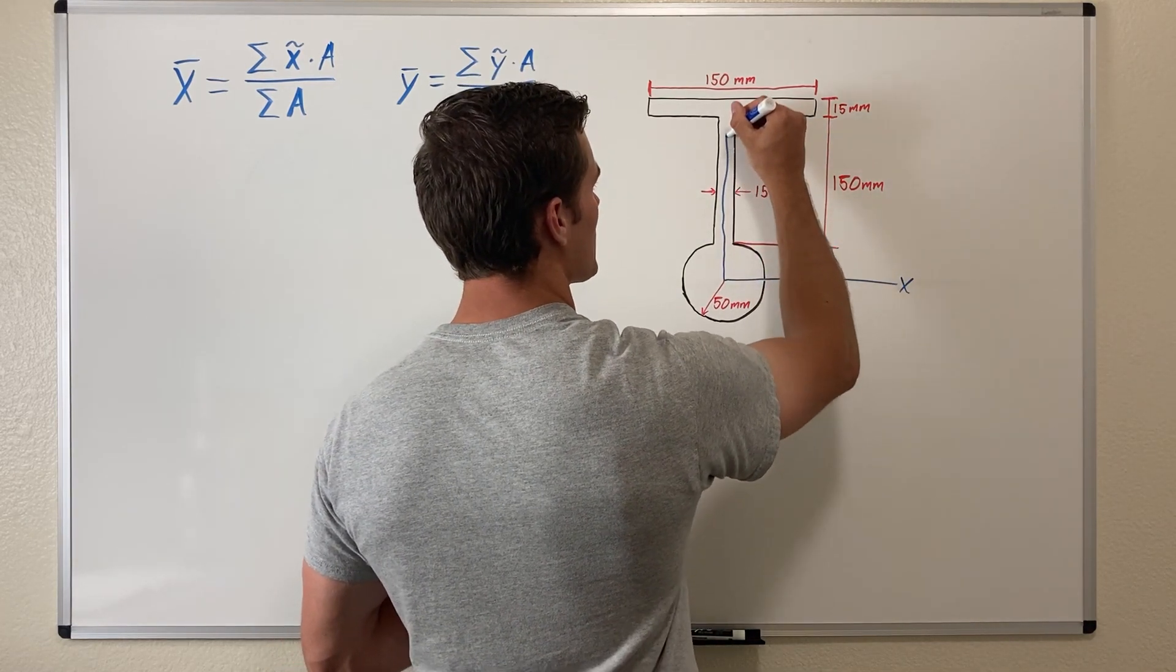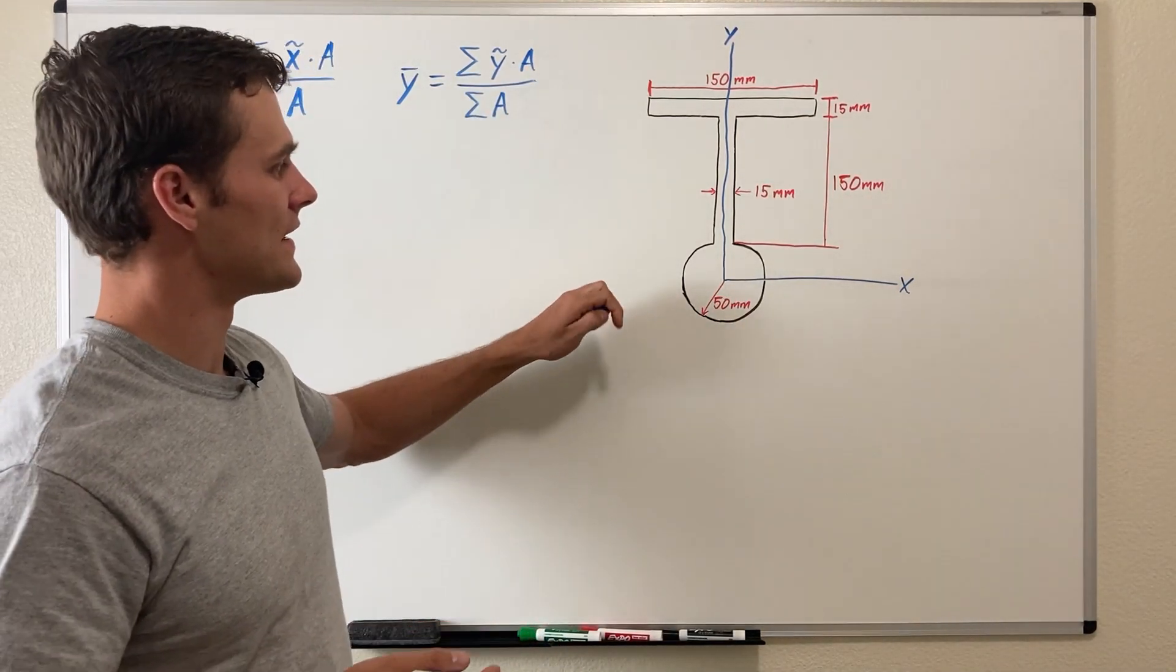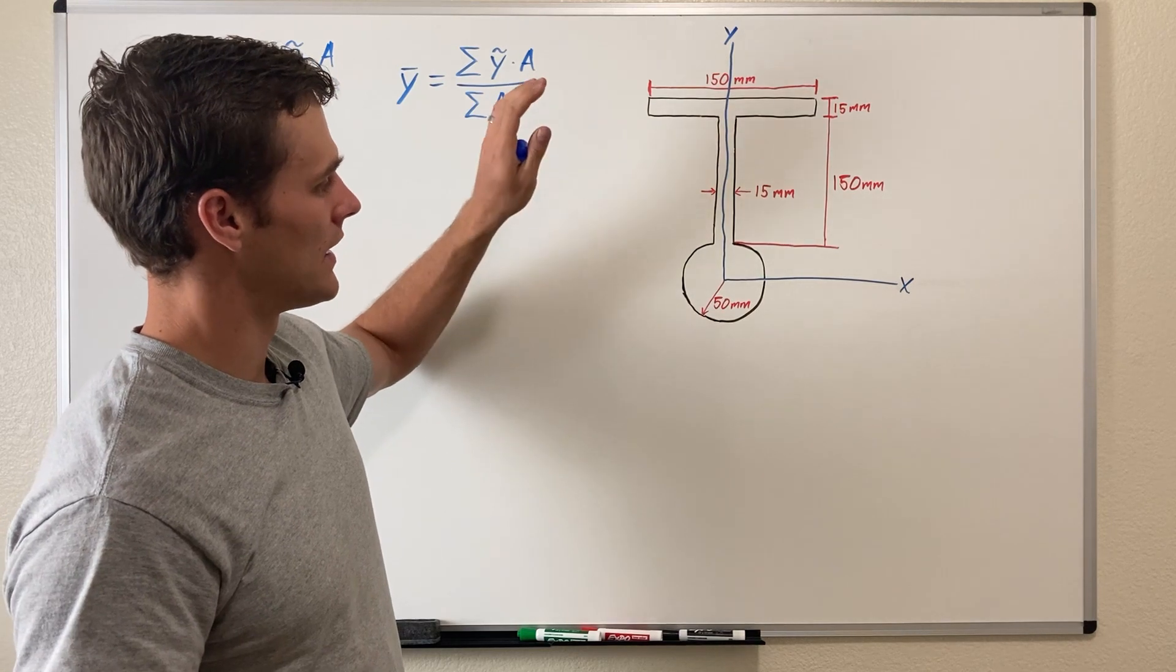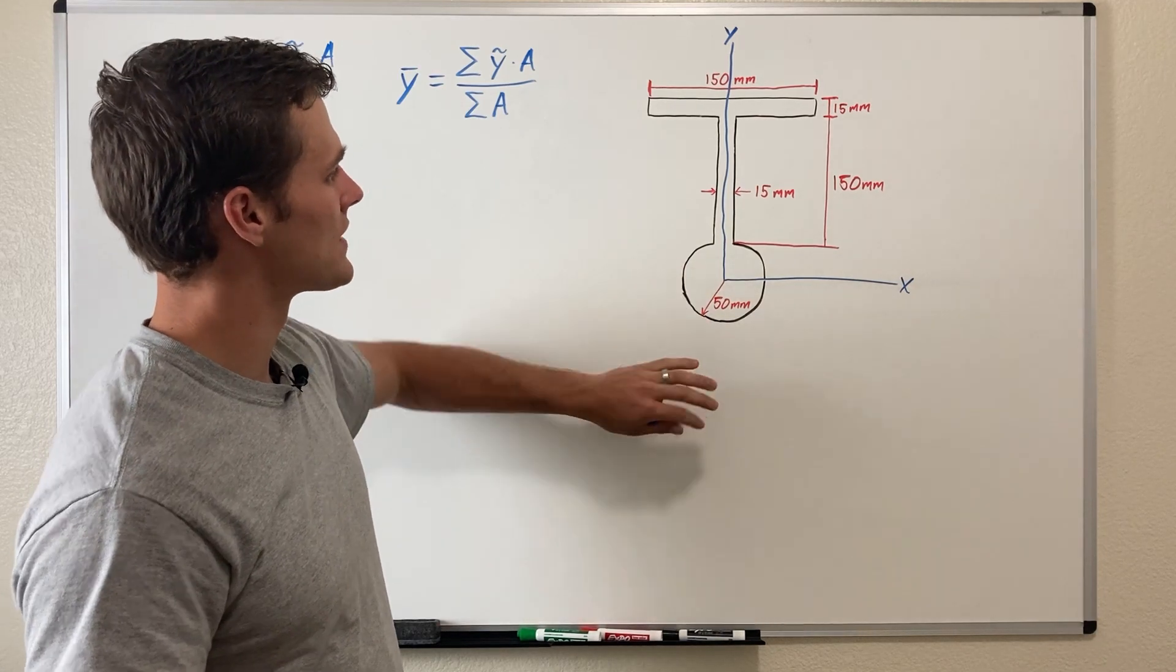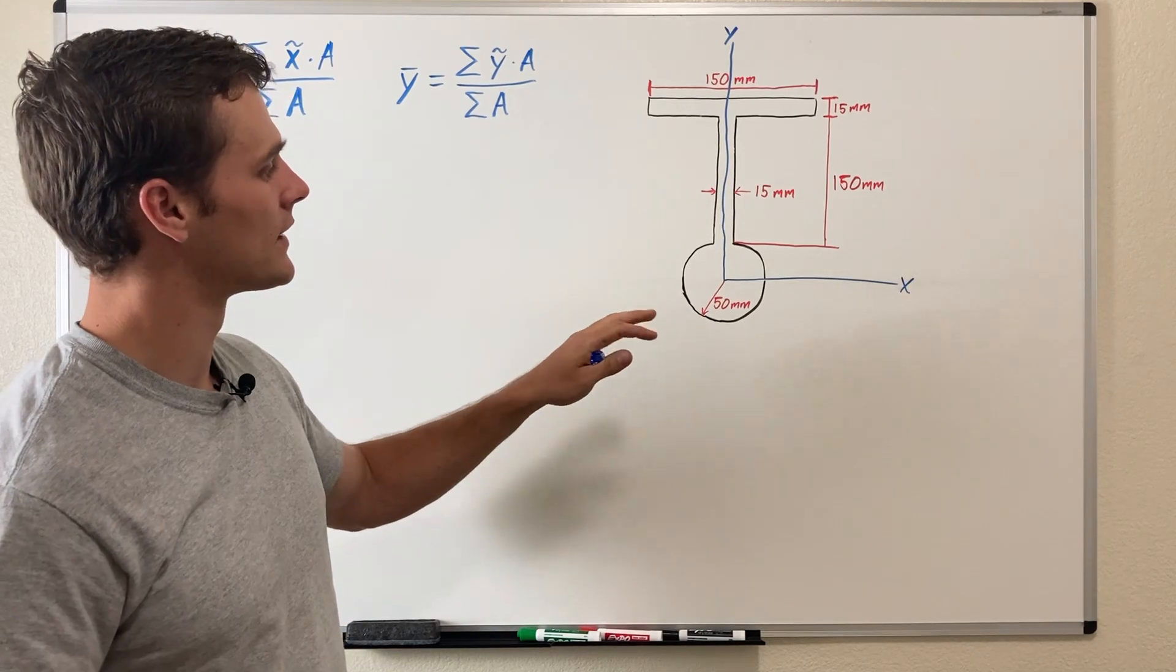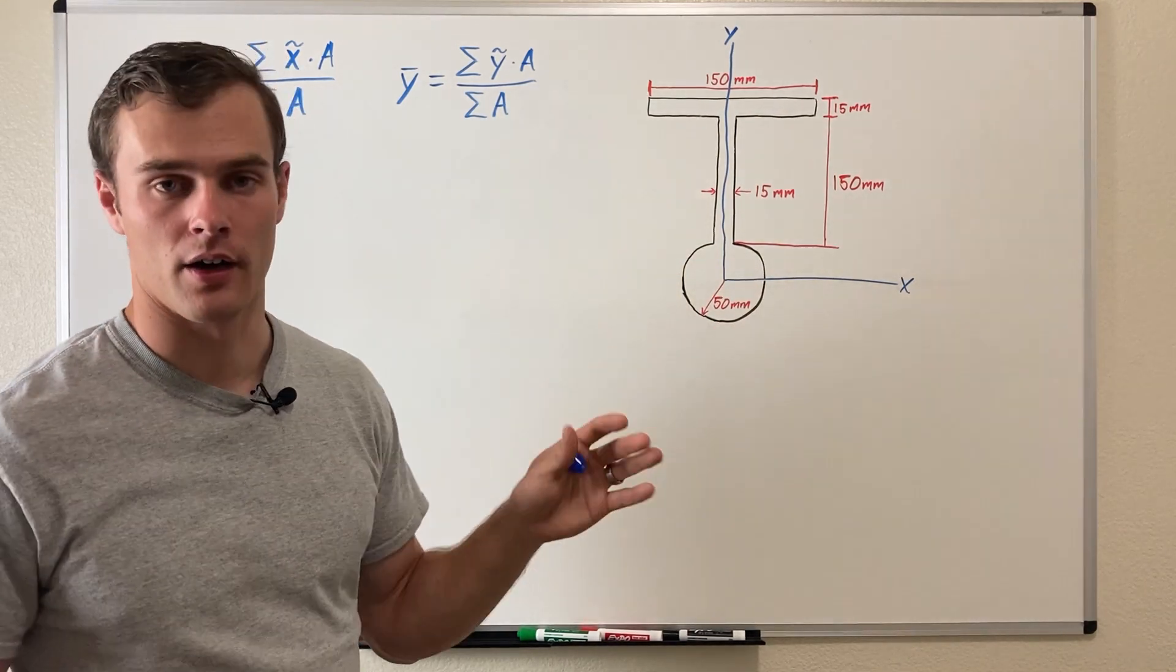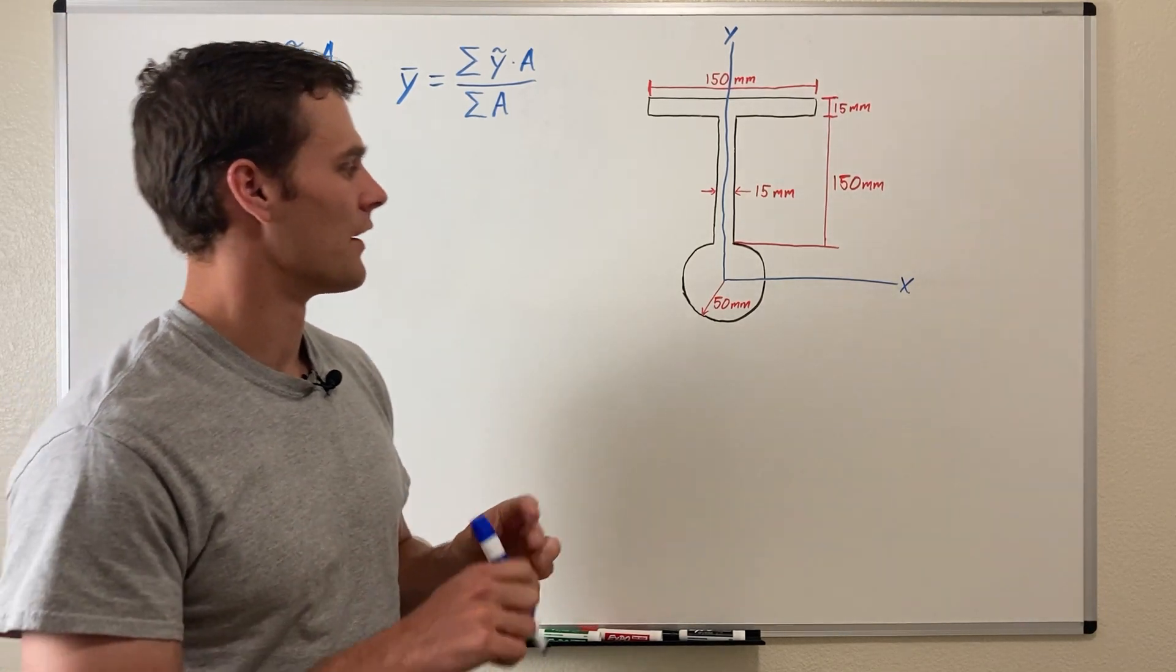This will be our x-axis along here and our y-axis going straight up the center. What that does for us is it puts a lot of the coordinates of the component parts in places that are going to be zero. Because this object is symmetrical about what we've now created as the y-axis, all the x coordinates for the centroids of each composite part are going to be zero.